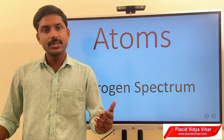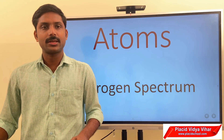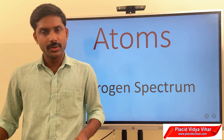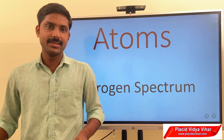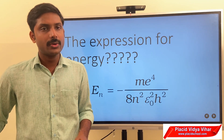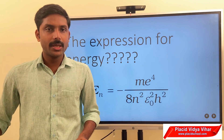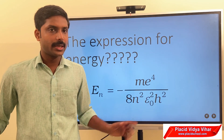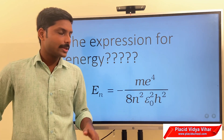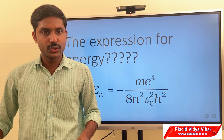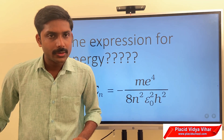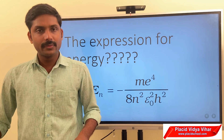Before beginning, recollect the expression for the energy of an electron in the nth orbit of hydrogen atom. It is En equal to minus m e to the power 4 by 8 n-squared epsilon-squared h-squared. The negative sign indicates that the electron is bound to the nucleus.